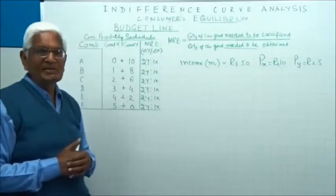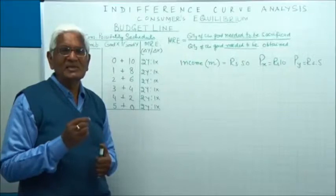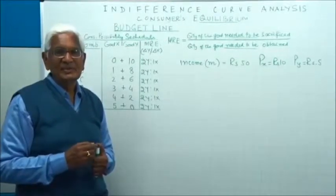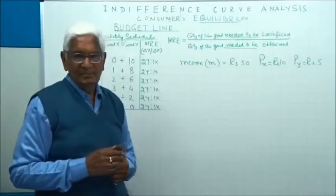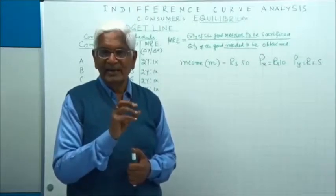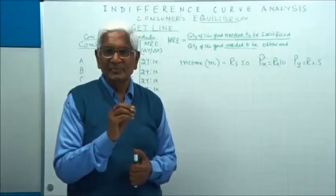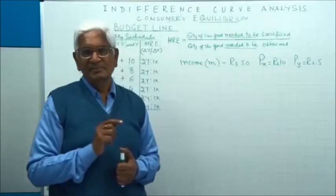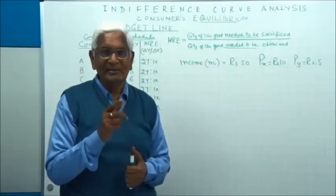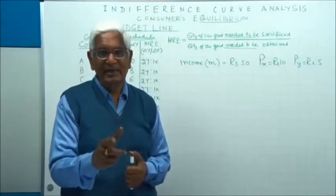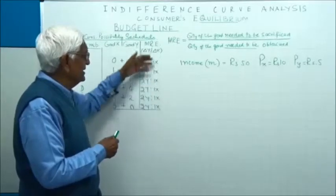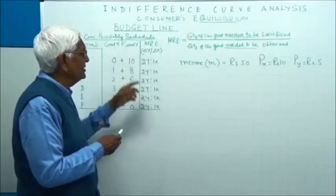The indifference curve shows what the consumer wants to give, while the consumption possibility schedule — the budget — shows what the consumer has to give. The indifference curve shows the price which the consumer is willing to pay, while the consumption possibility schedule shows the price the consumer has to pay in the market to obtain X and Y. We call this the market rate of exchange of Y for X.